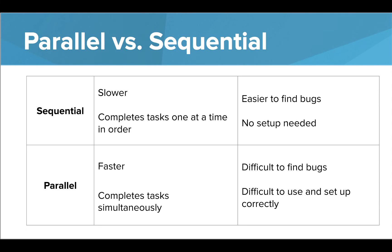So if we compare the two, sequential computing is definitely slower because it completes one task at a time, but it is easier to find bugs and there's no setup needed. With parallel computing, it completes things faster because it's completing tasks simultaneously. But it does make it a little difficult to find bugs and definitely difficult to use and set up correctly.